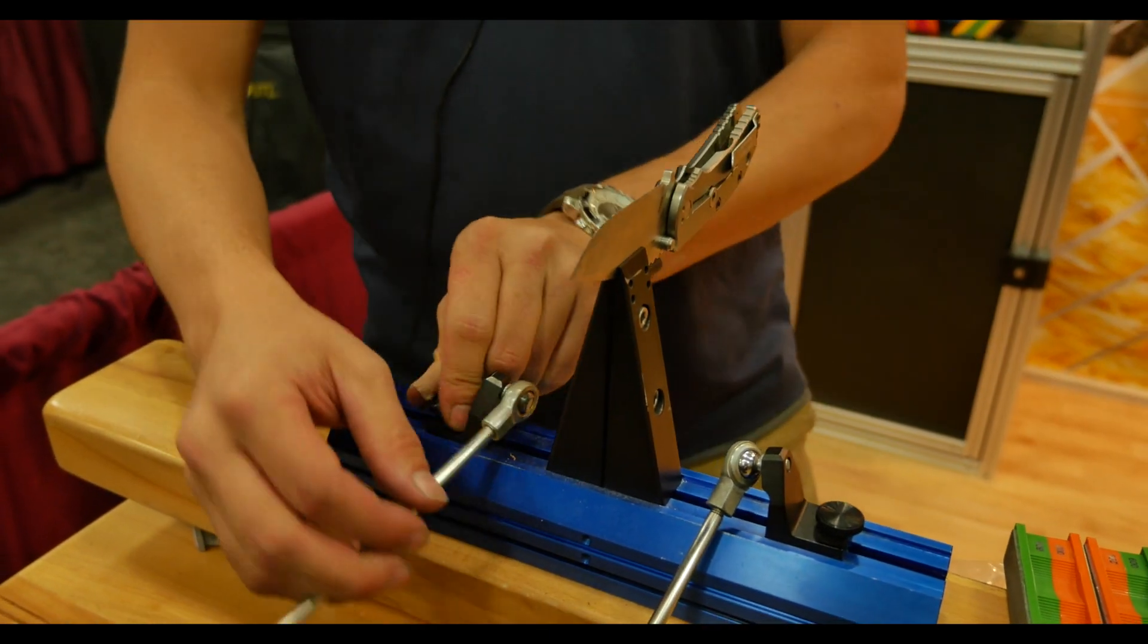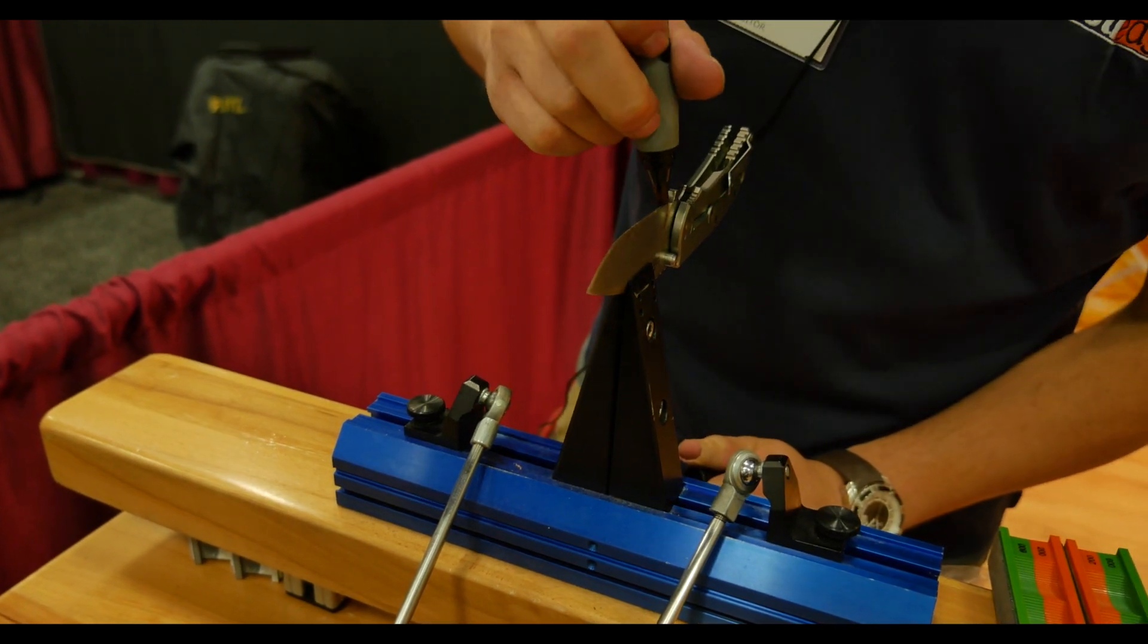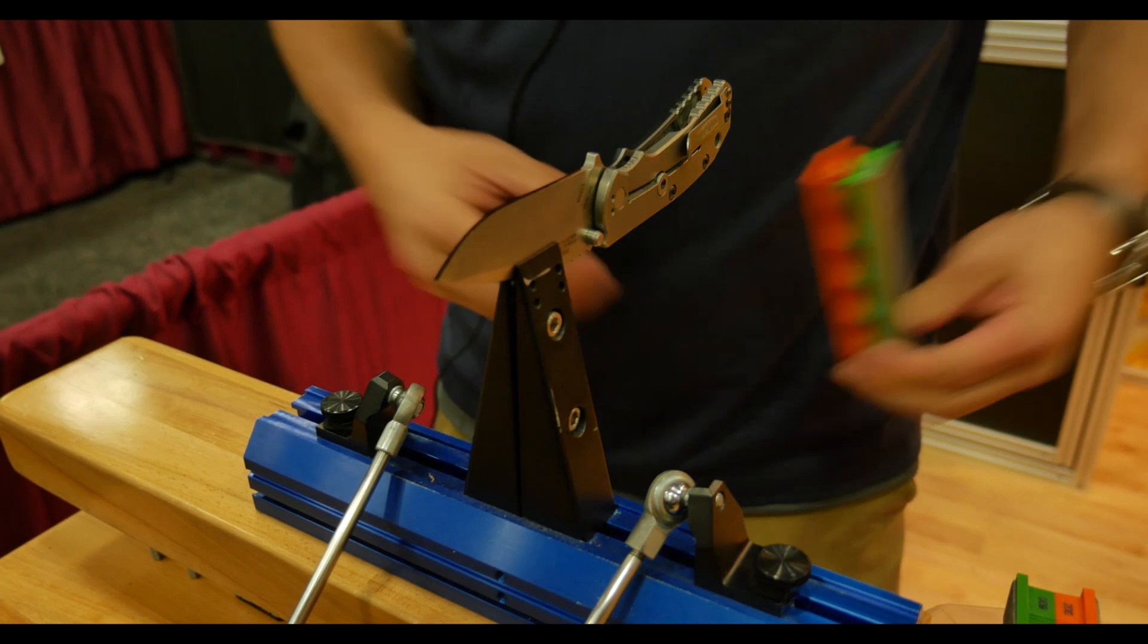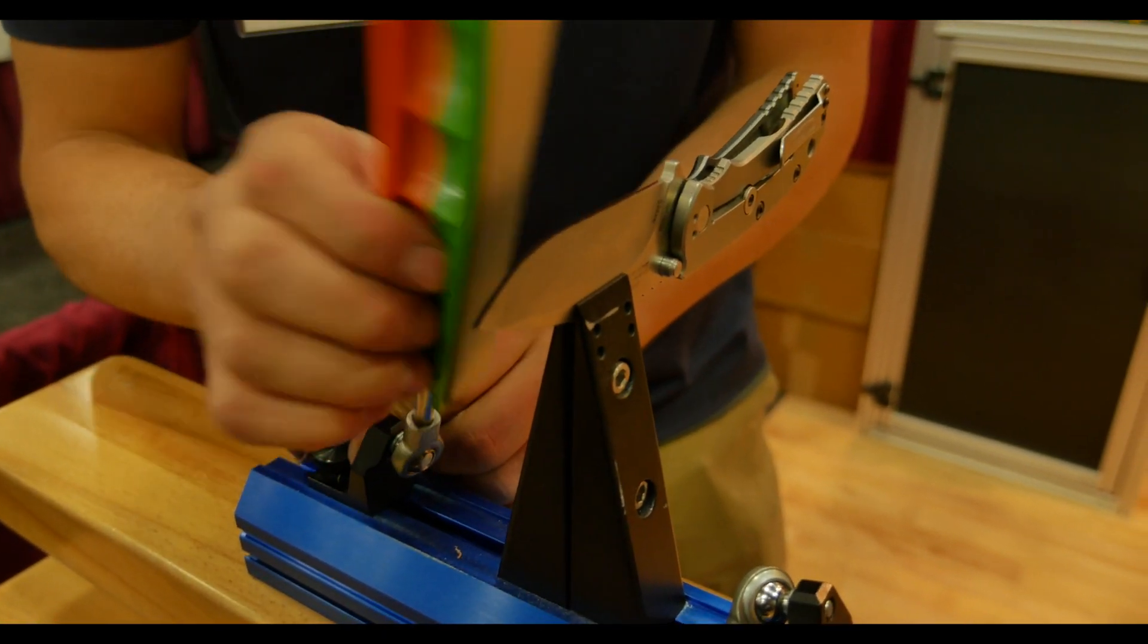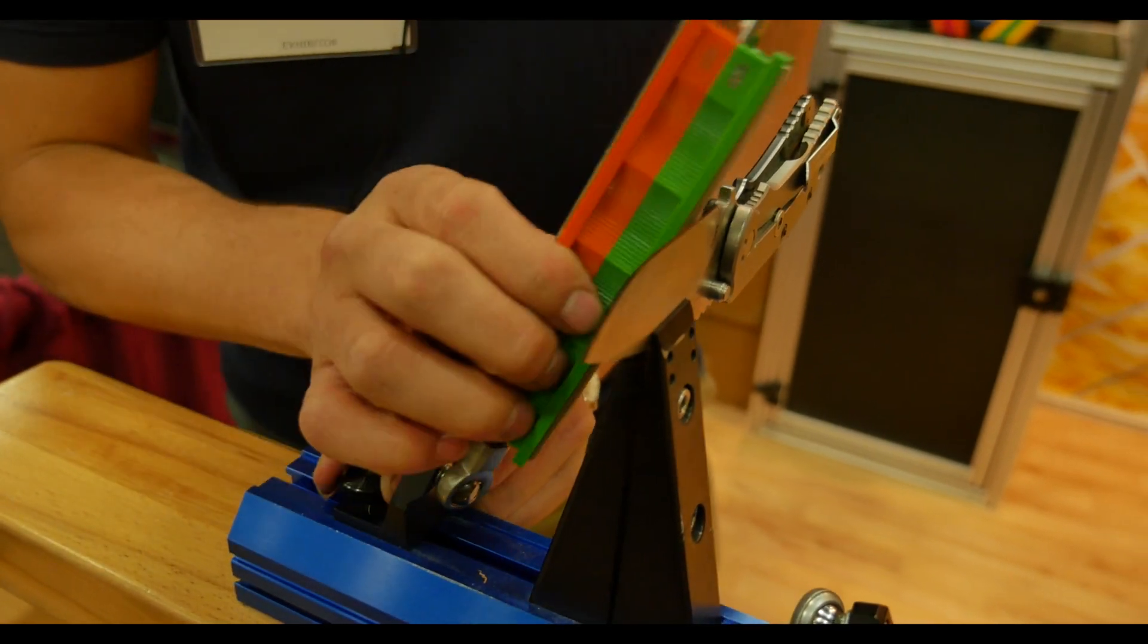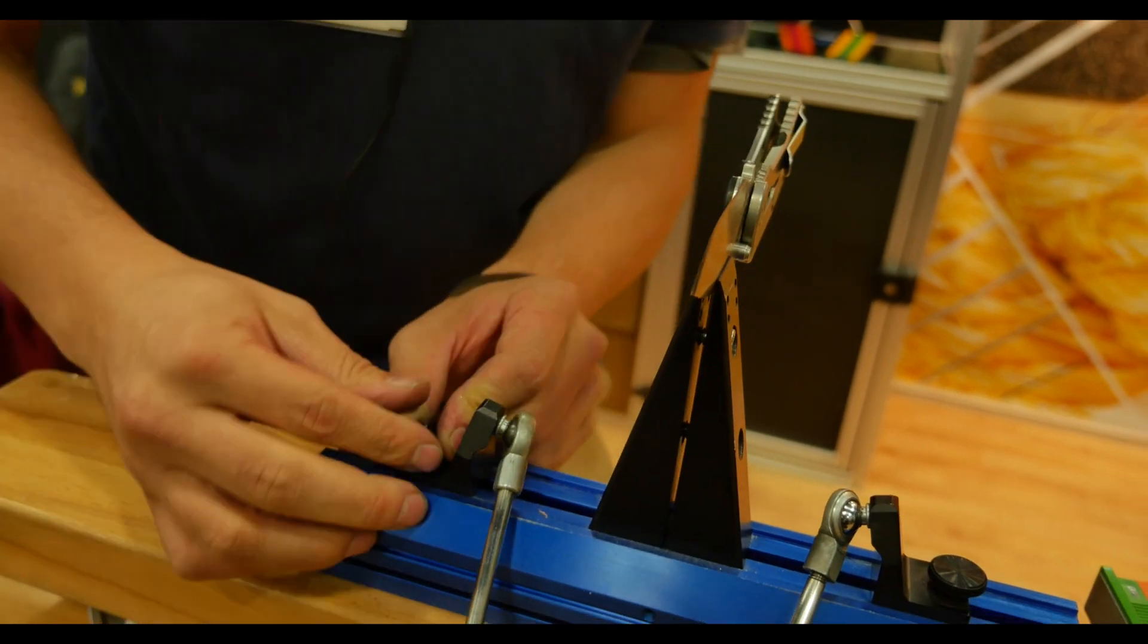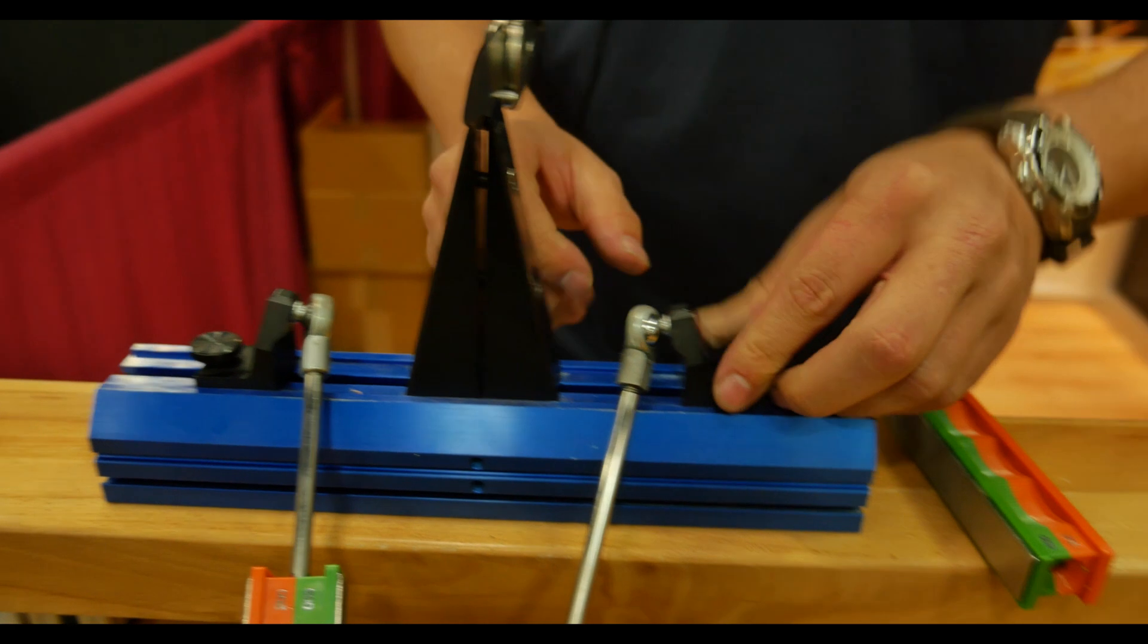And then what I do when I sharpen a knife to start is I just color the bevel with a marker. And then I do some trial and error with the fine diamond stone, the 600 grit, until I find an angle where the marker comes off evenly from the bevel. And on this knife here it's going to be 25 degrees, so I'll just lock it in place using this thumb screw.